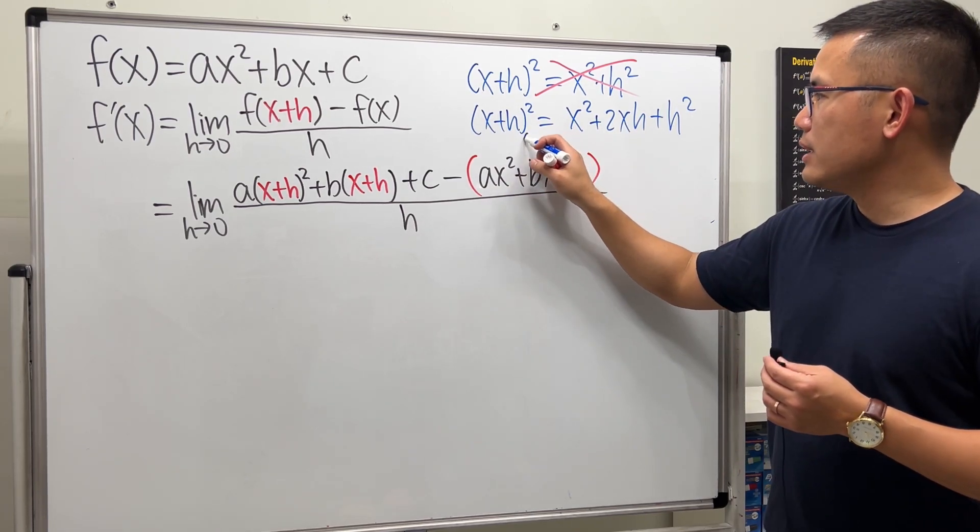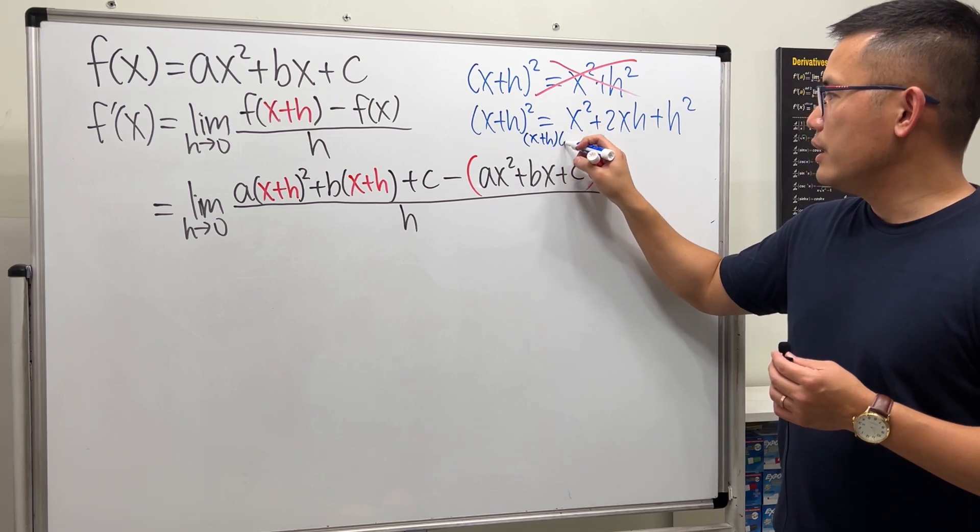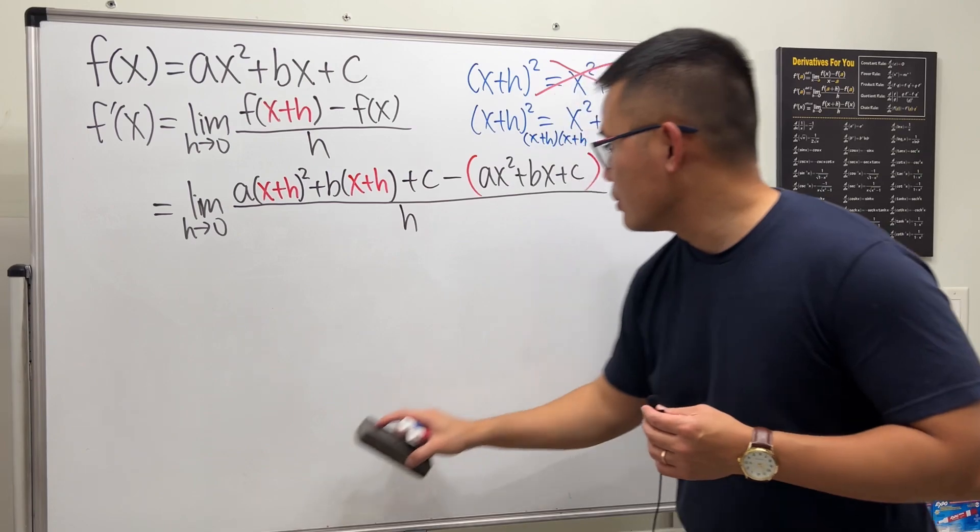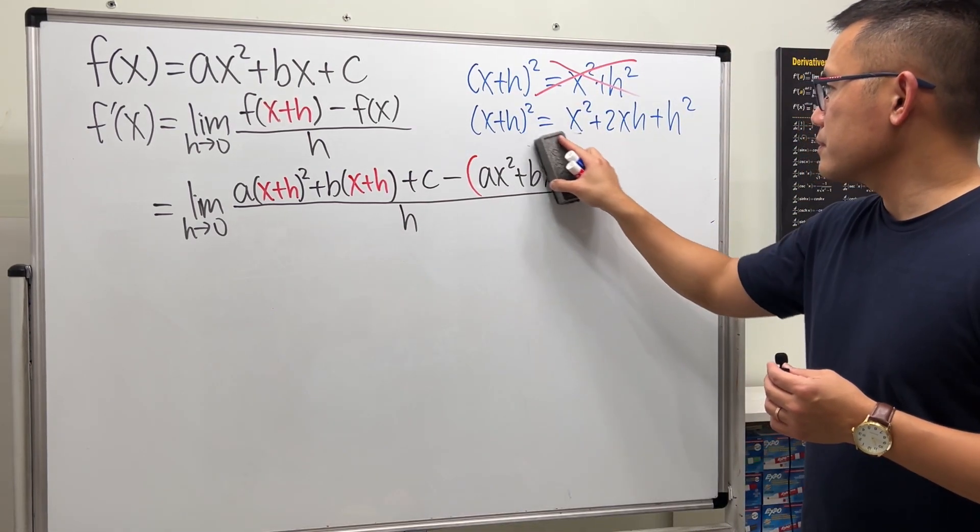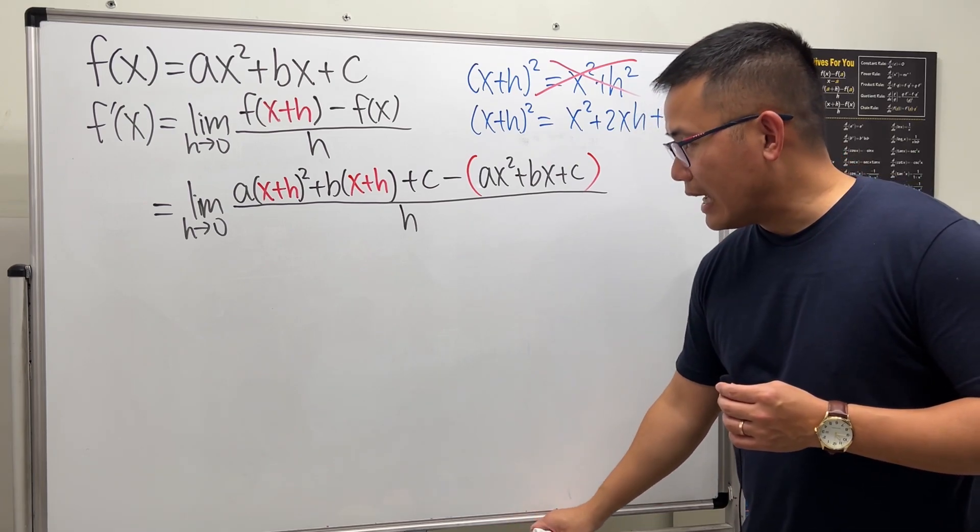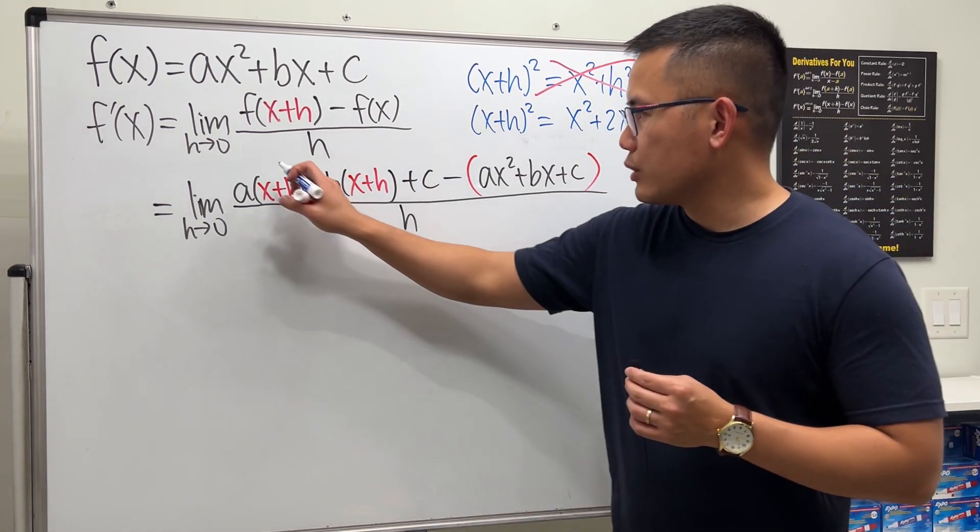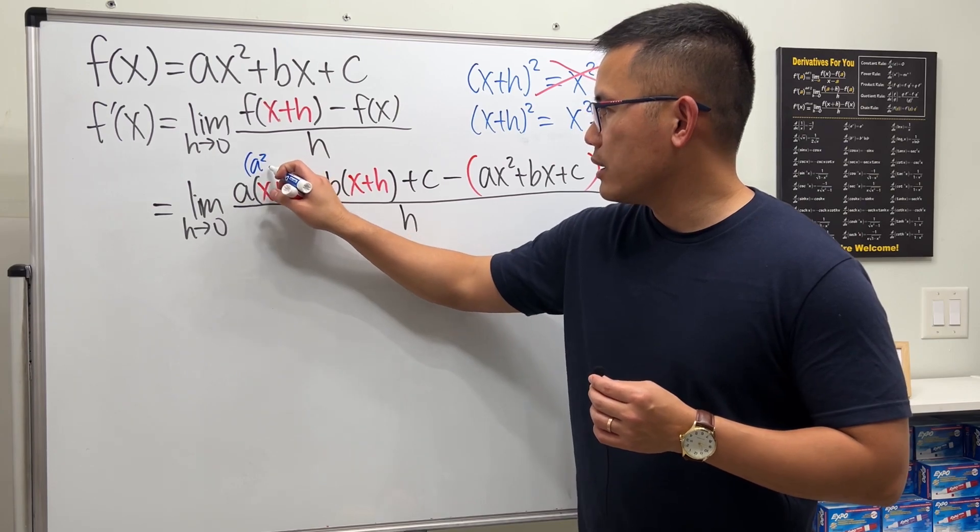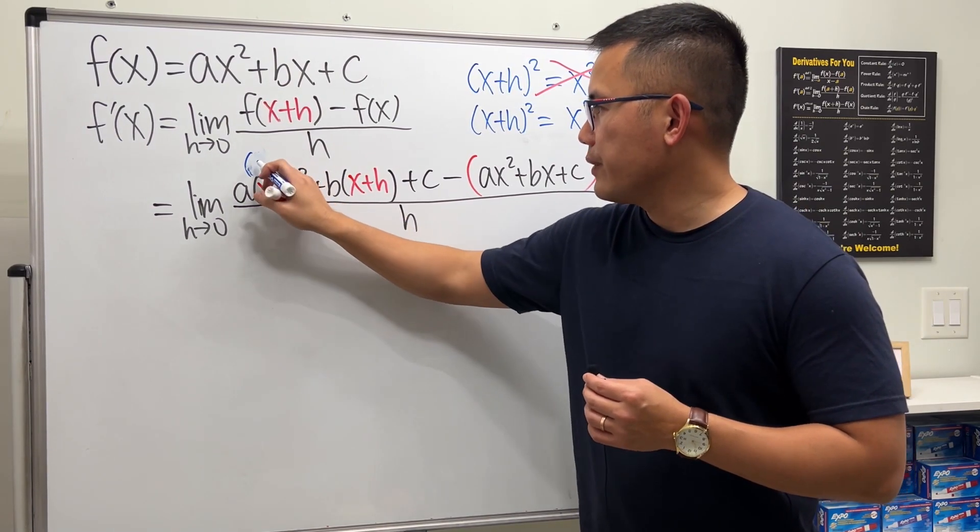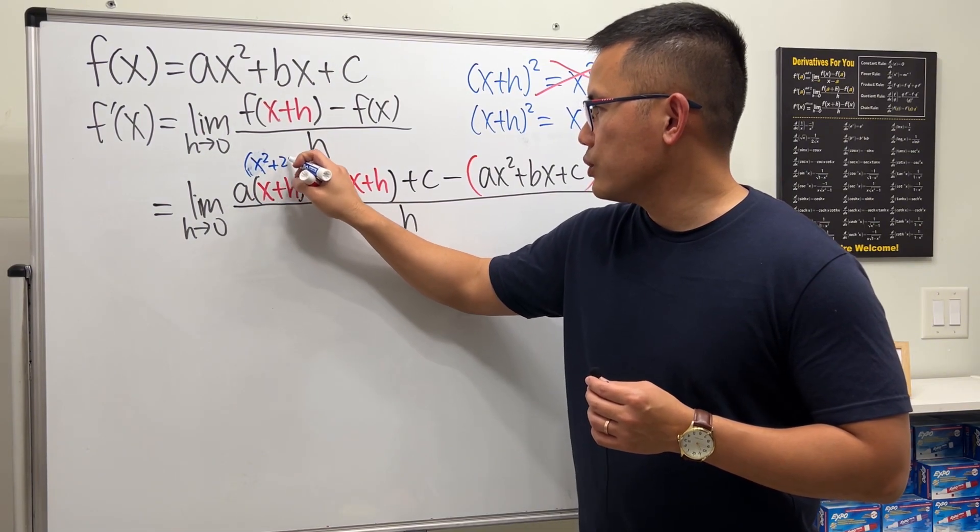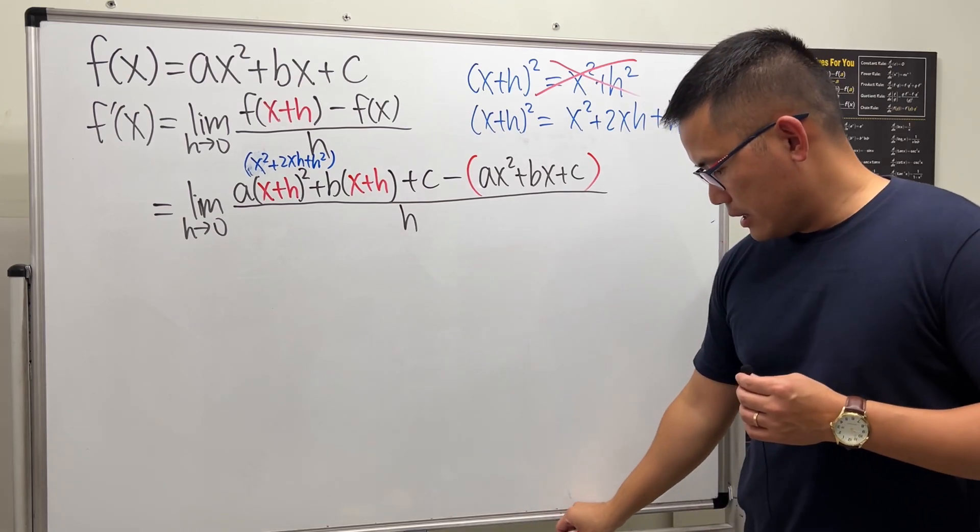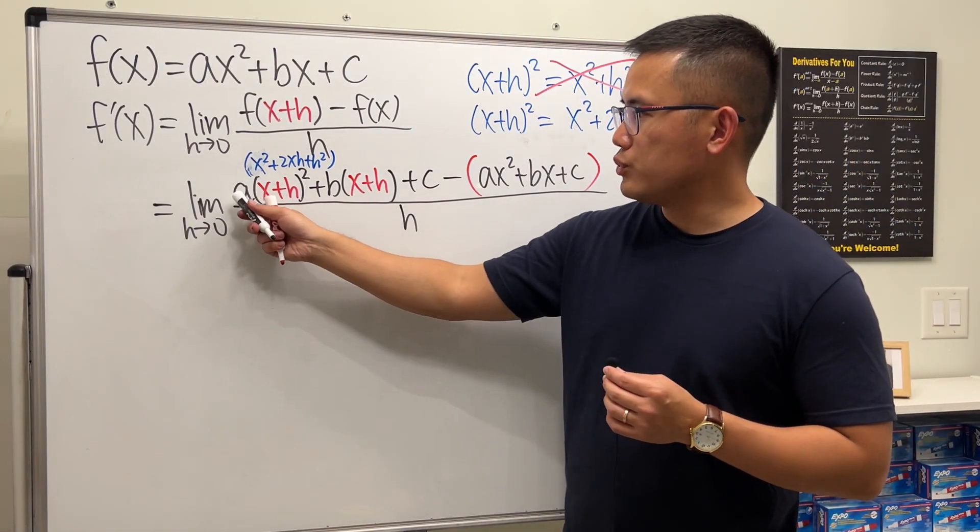And you can also just write it down twice. x plus h, x plus h, and then multiply this out. So go ahead and just work that out on your own. So that's what we have. I'm just going to write down the result right here: x squared plus 2xh plus h squared.